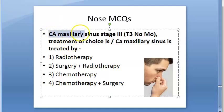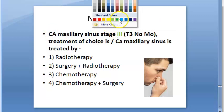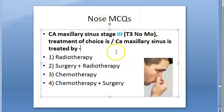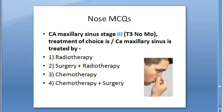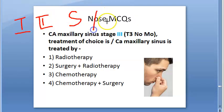Let us look at a few more questions on paranasal sinuses. Carcinoma of maxillary sinus — the given stage is Stage 3. How will you treat it? For Stage 1 and Stage 2, the treatment is surgery or radiation.